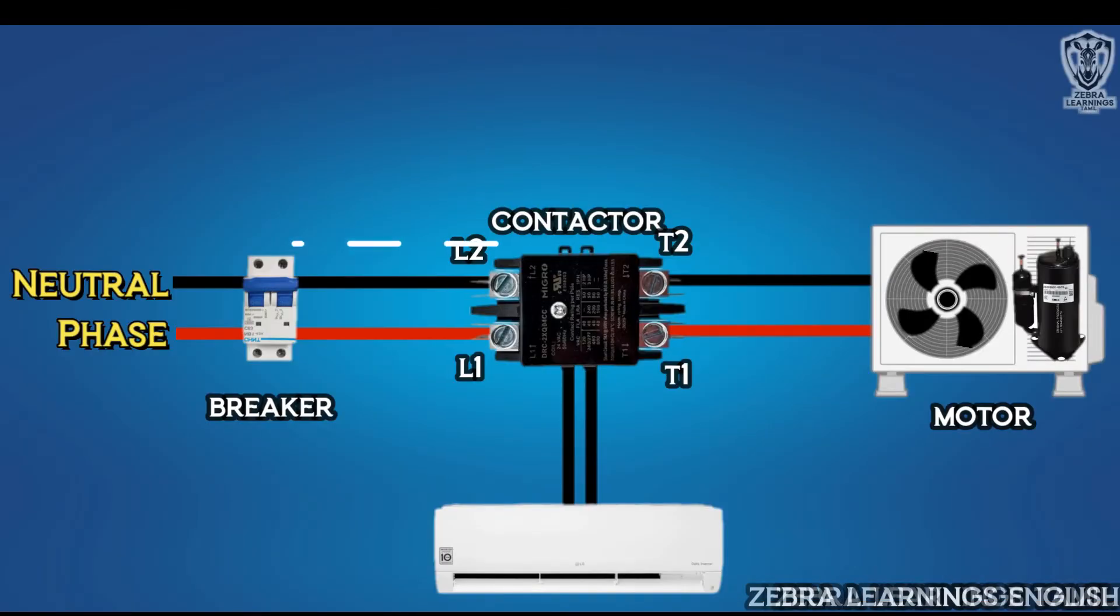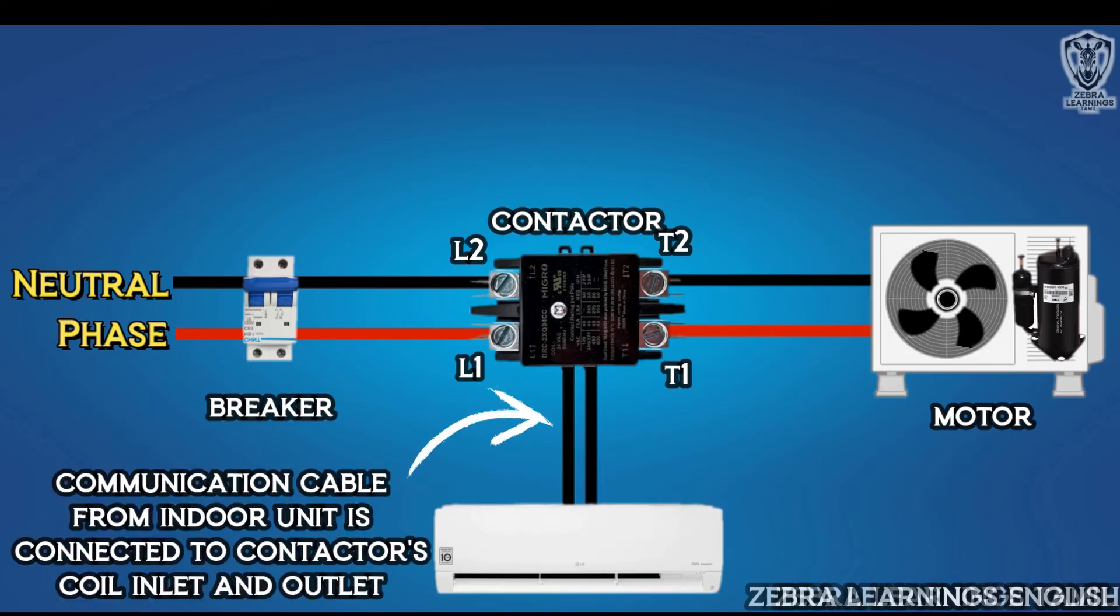It is a two-pole contactor, whose L1 and L2 ports have wires connected from the main power supply. Compressor and fan motor are connected from T1 and T2 ports. Control wires are connected from the indoor unit to the contactor's coil inlet and outlet port. This is the wiring connection of the contactor in the outdoor unit of the AC.